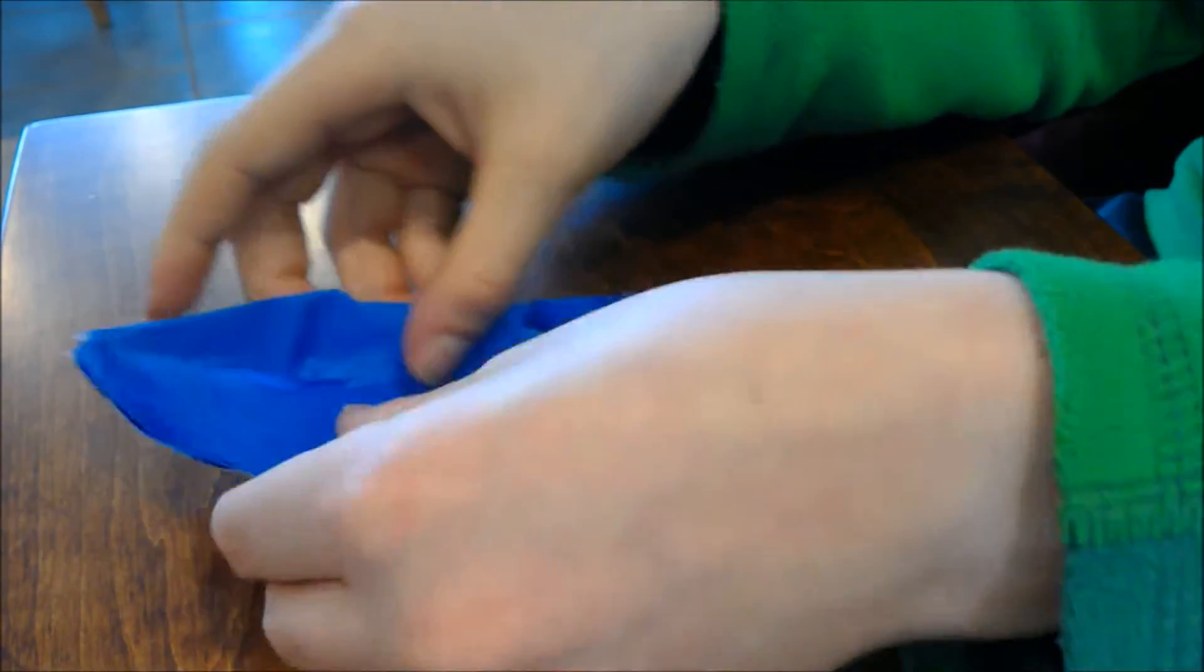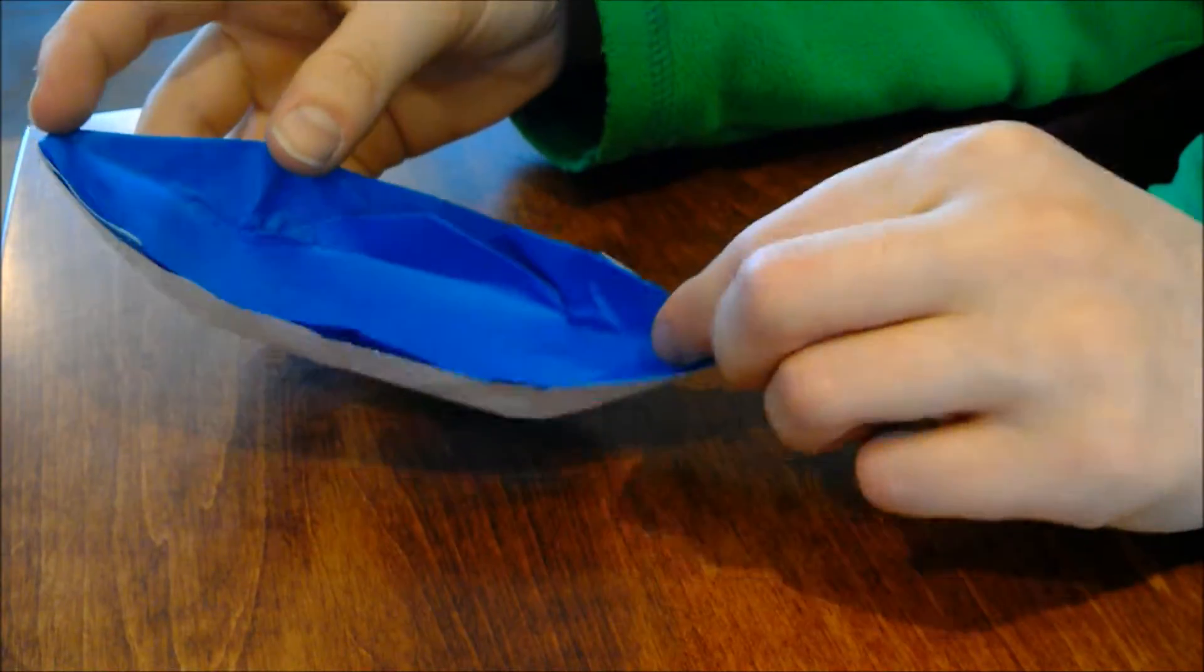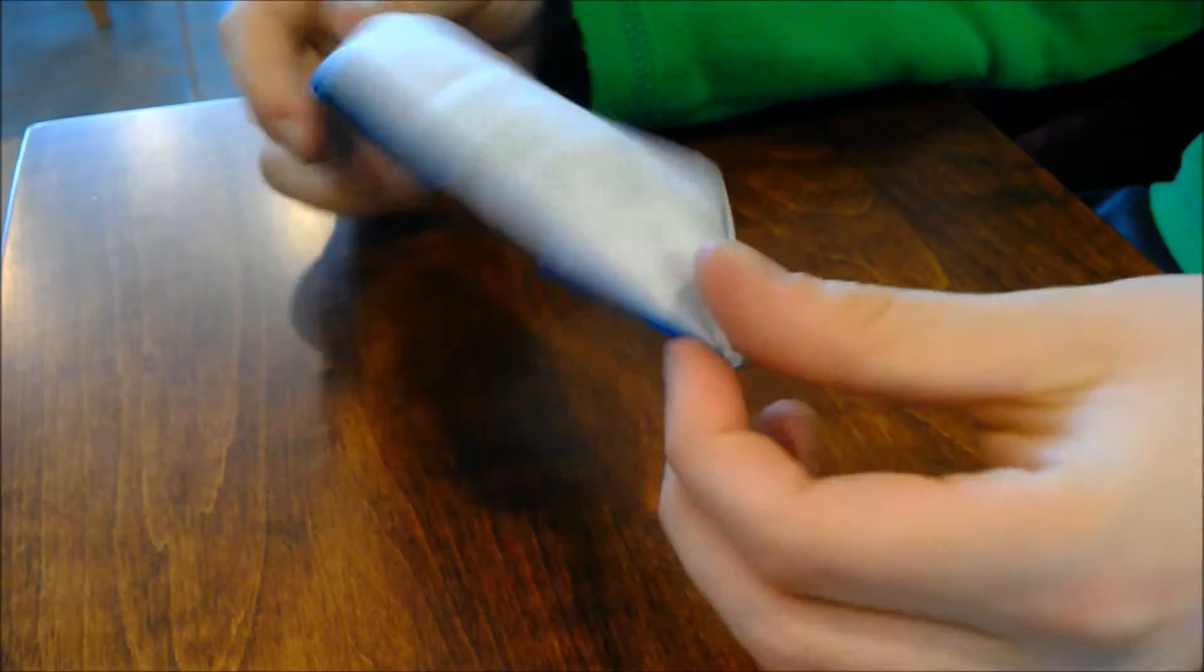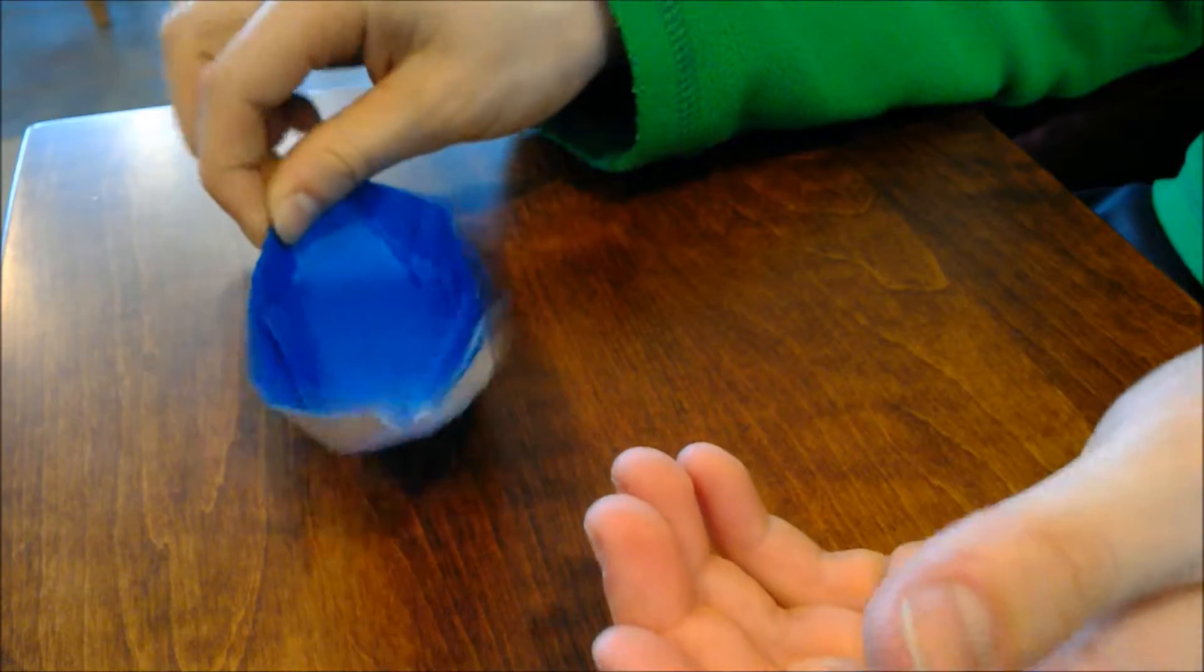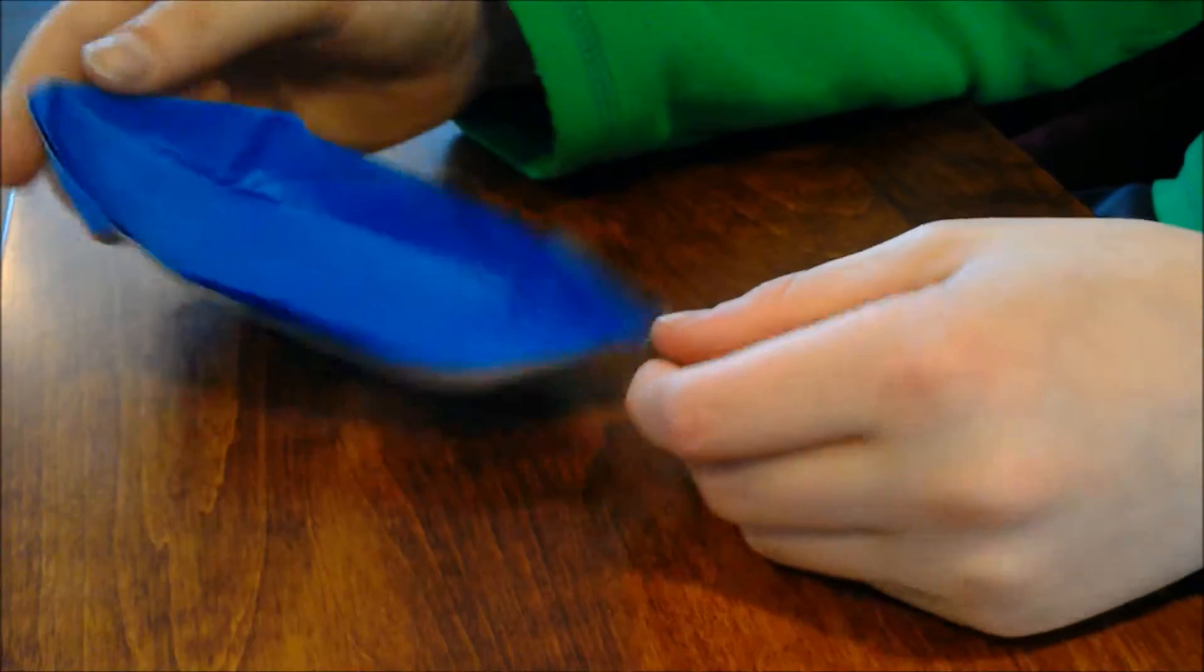And there you have it, your nice boat. And if you want it to be white on the inside and color on the outside, you can just start with the color side up instead of the white side. I'll see you in the next video.